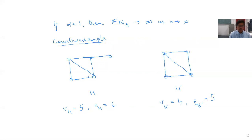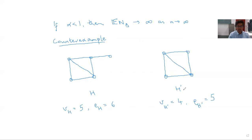We are going to calculate the expected number of copies of H and of H' present in the random graph. Take a moment to remember the figures H and H' because I'm going to erase this in a moment to do the calculations.